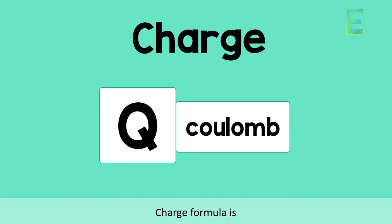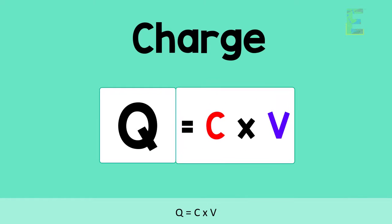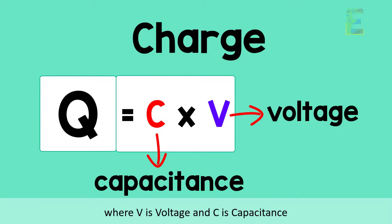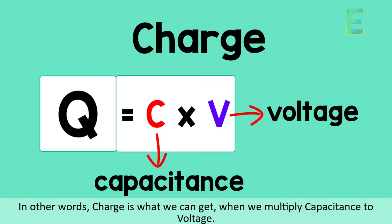Charge formula is charge is equal to C times V, where V is voltage and C is capacitance. In other words, charge is what we can get when we multiply capacitance to voltage.